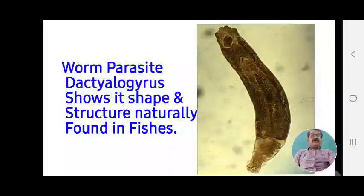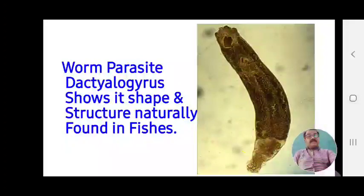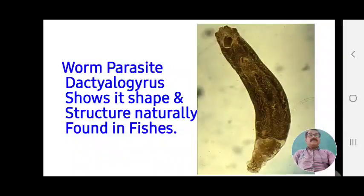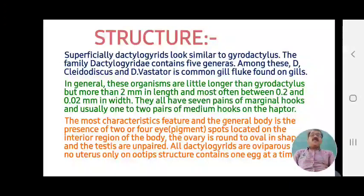This shows the shape and structure of the Dactylogyrus parasite as naturally found in fish. The haptor region and haptor spots are naturally observable. These parasites attack and affect fish in culture ponds and major carp culture systems.